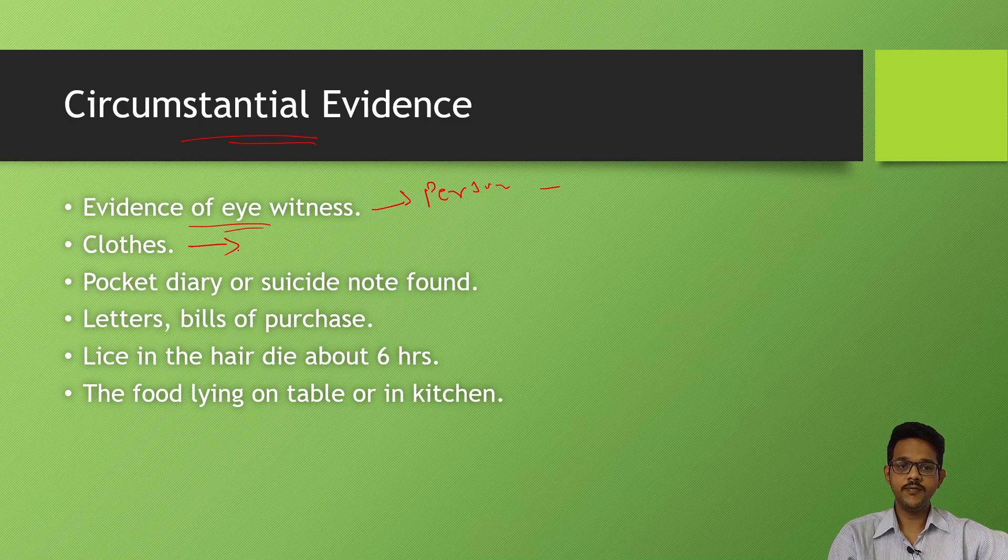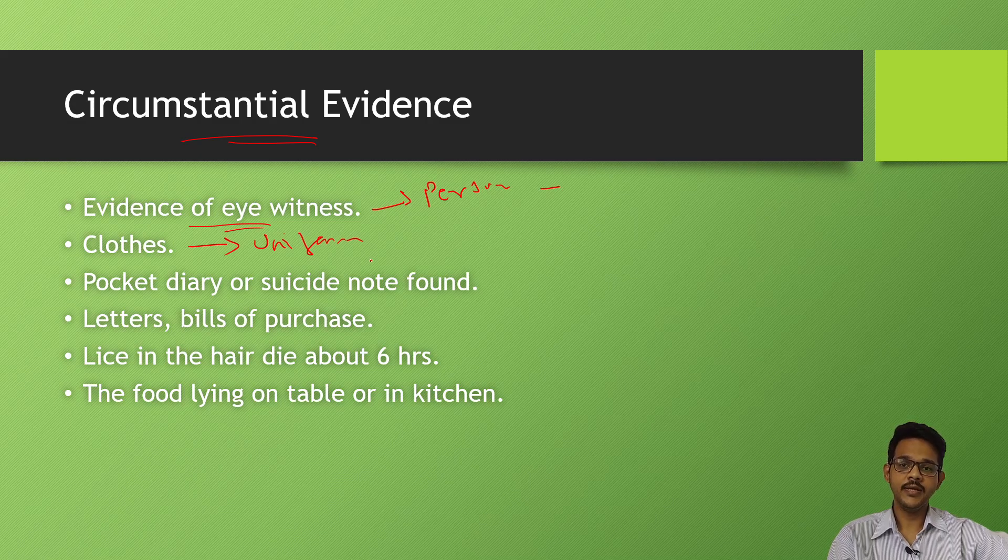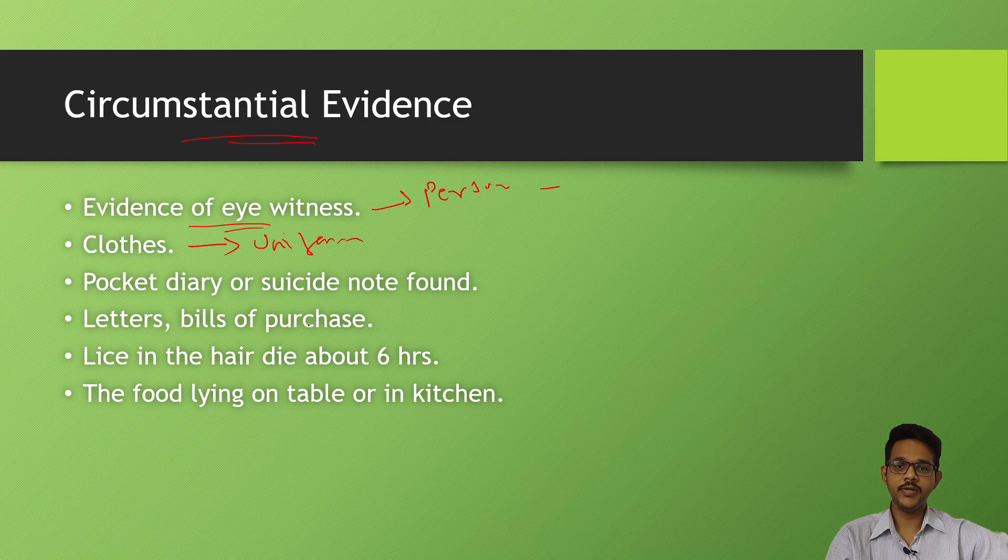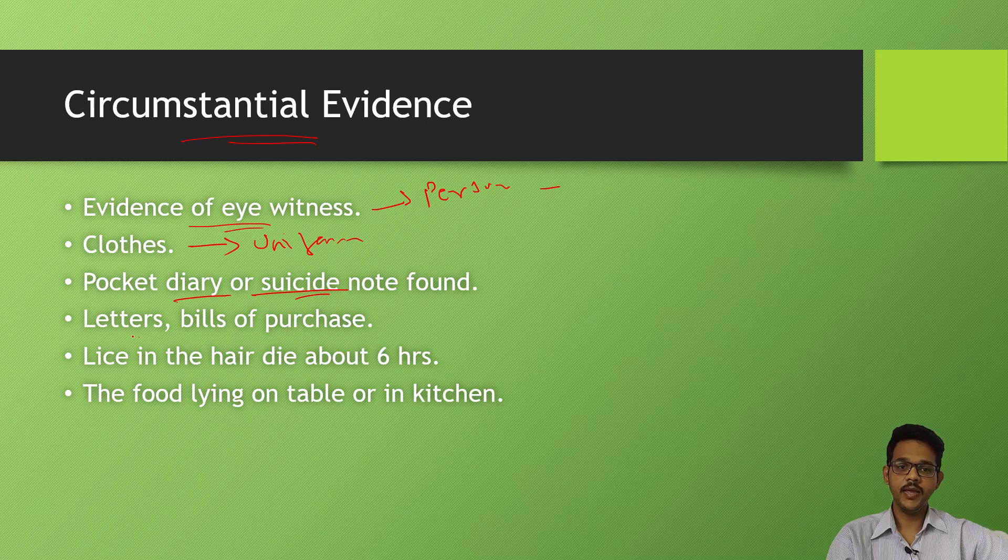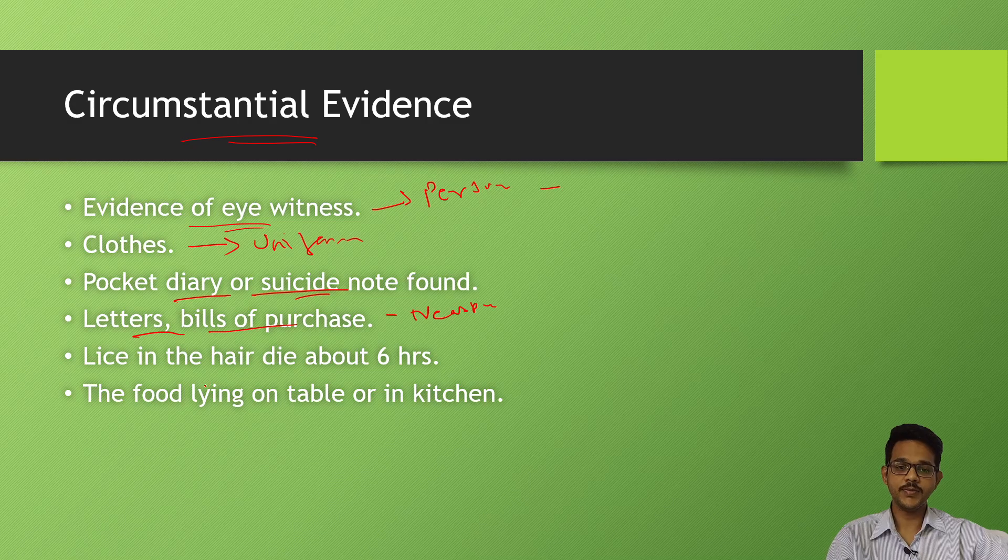Clothes - mainly if the person is having some uniforms and he goes to work, we can tell whether the person was working. If he was wearing those uniforms when he died, it indicates the work hours, which gives an estimate of time since death. Pocket contents like diary or suicide note if found is very helpful. Letters, bills of purchases, newspapers are helpful - whether he has paid the bills gives a rough idea of time since death.